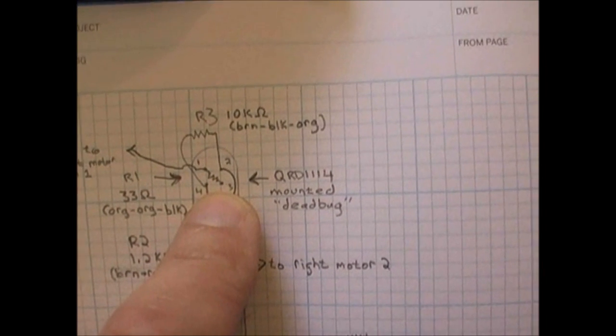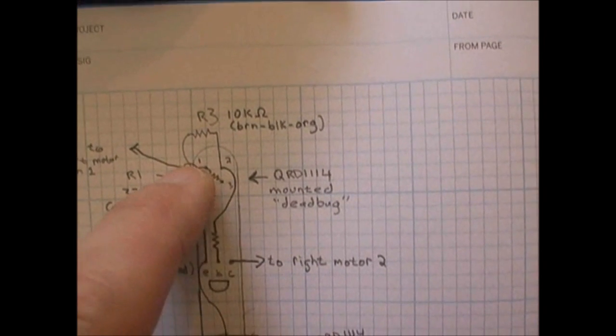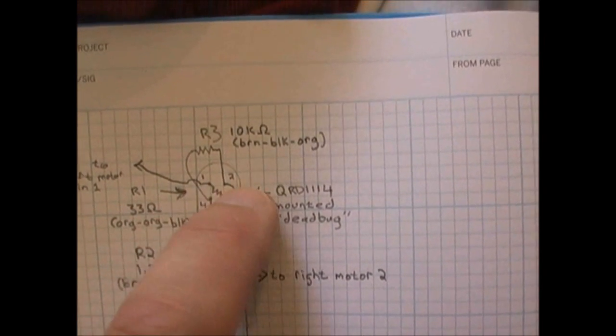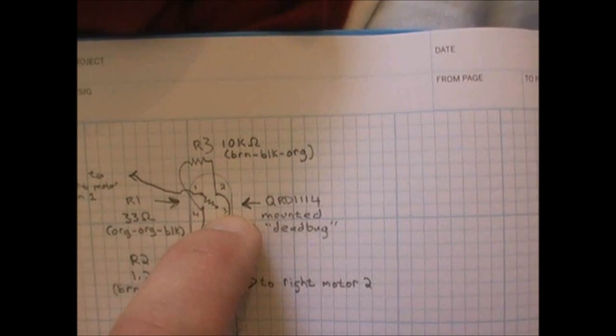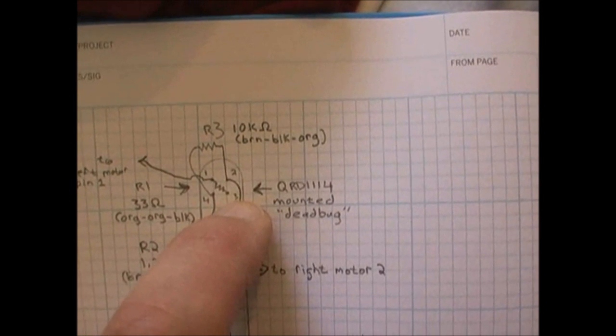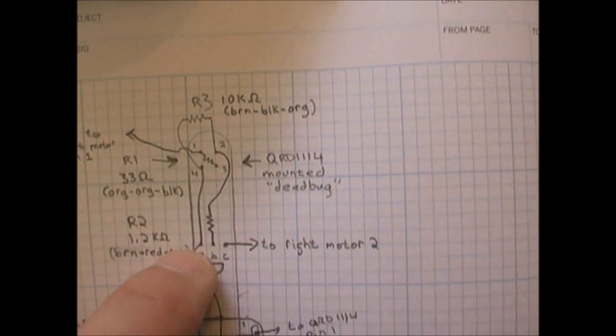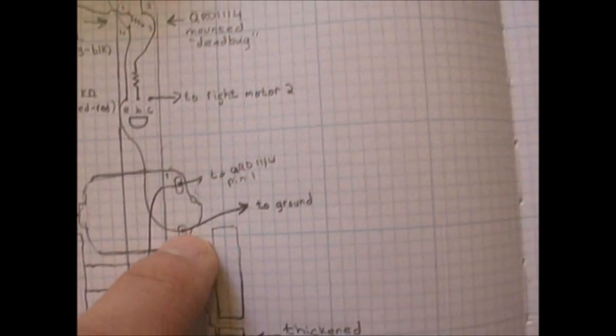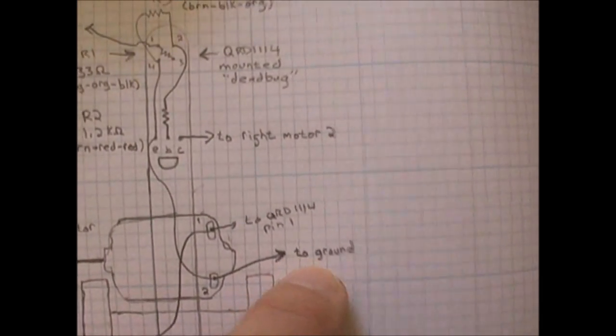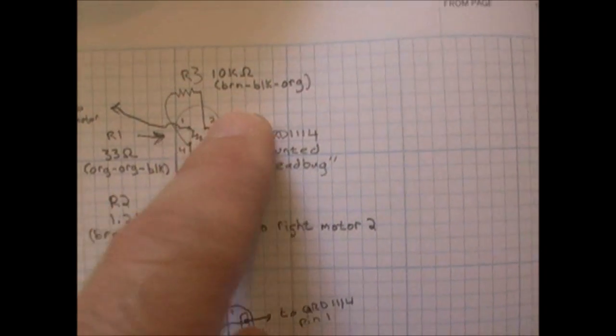Power comes into pin one for the detector part of the sensor, goes through the resistor, and then into pin three, which goes into the emitter. Then, pin four is the other side of the emitter. That goes back to the emitter of the transistor, and then back to ground. This resistor is actually mounted directly on top, crosswise, between pin two and four. That is a 10K pull-down resistor.